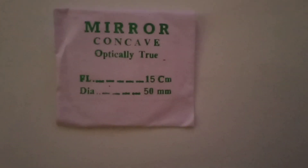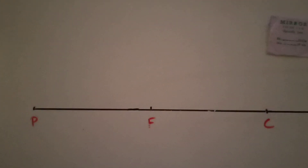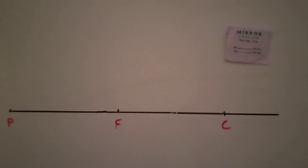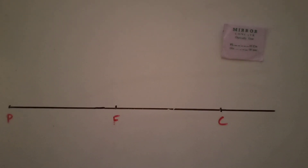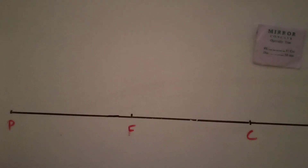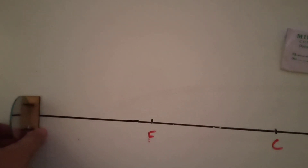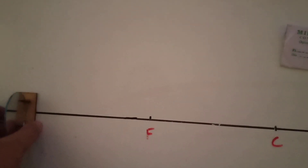Now we will see image formation by a concave mirror. I have a concave mirror with focal length 15 cm — you can get a full set from Amazon for about 400–500 rupees. Draw the principal axis, then mark P, F, and C, each 15 cm apart. Place your concave mirror on the mirror holder at P. Case one: I have kept the object very far from the mirror, at infinity.